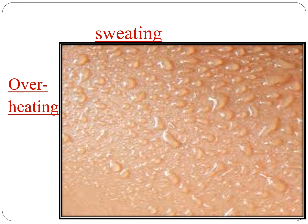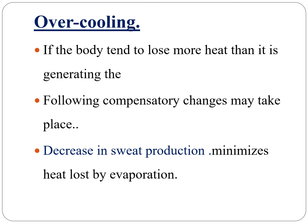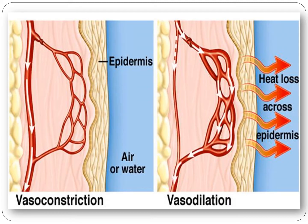This figure shows sweating in the process of overheating and viso-dilation. Second is over-cooling. If the body tends to lose more heat than it is generating, the following changes may take place. Number one is a decrease in sweat production, which minimizes heat loss by evaporation. Viso-constriction involves constriction of arterioles resupplying the surface, making smaller heat loss. Viso-constriction makes a person look pale or blue.